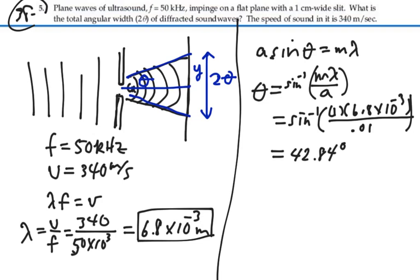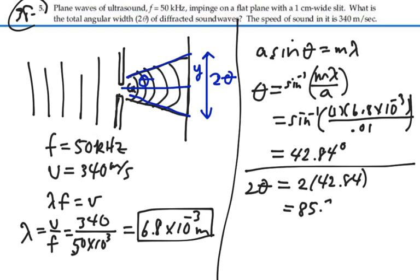That's the angle to the first minimum on either side from the central point. So if we want the total width in terms of angle for the width of the central maximum, we want 2 theta. So that's going to be 2 times 42.84, which will give us 85.7 degrees. So the width of our central maximum in terms of angle is 85.7 degrees.